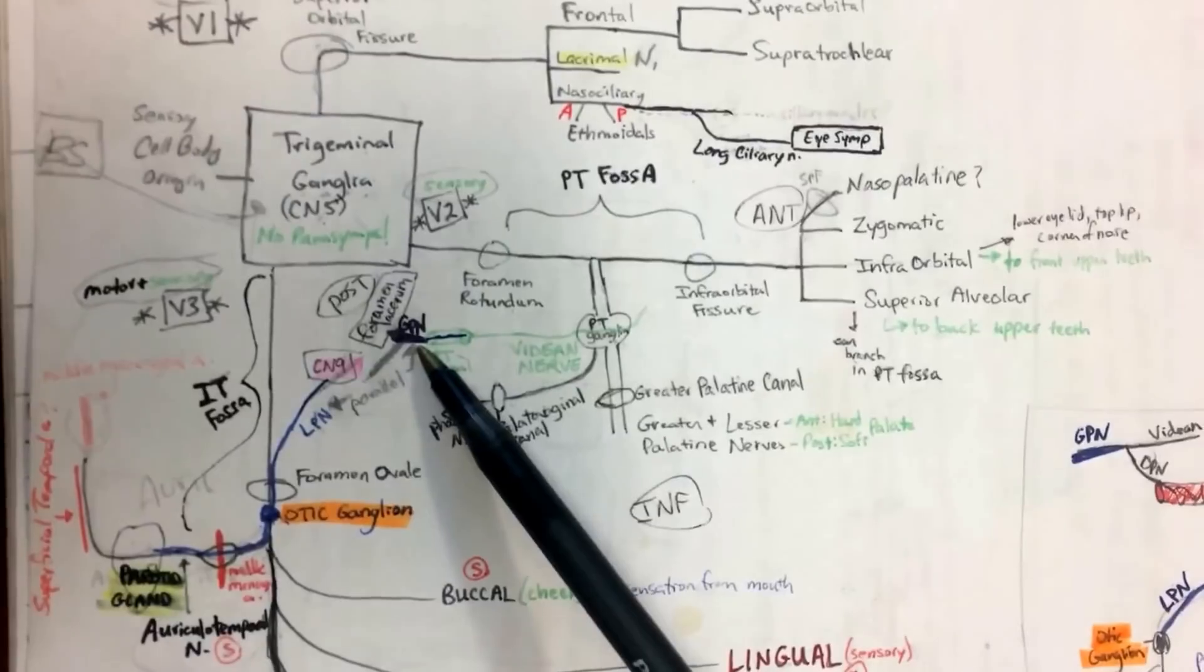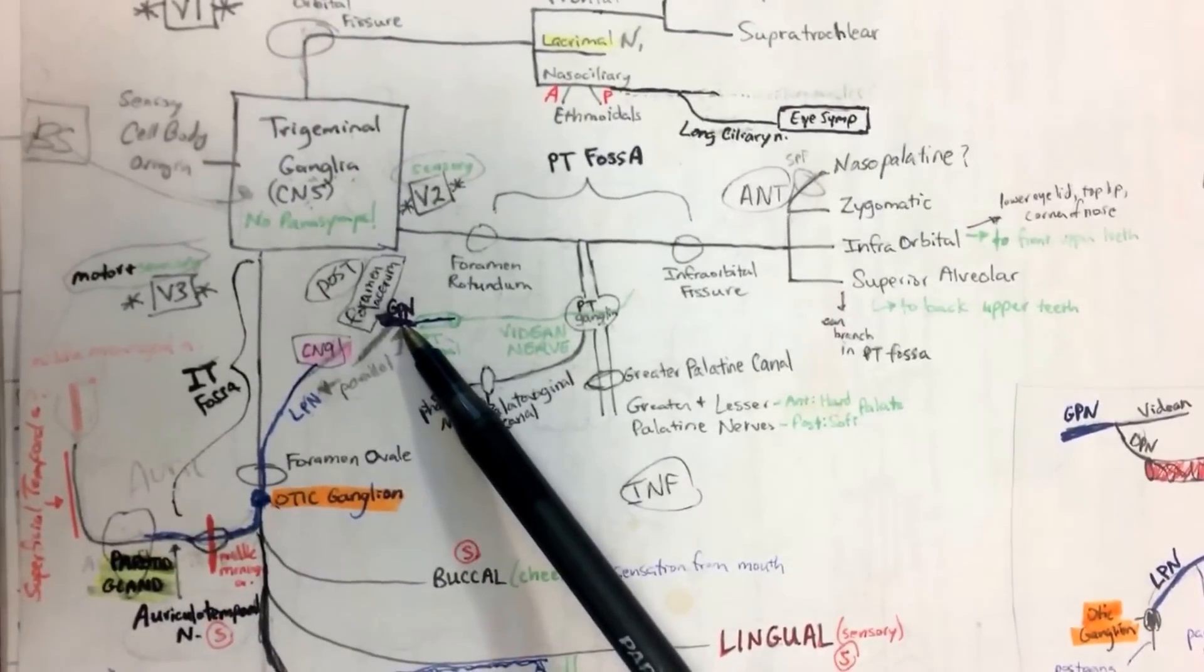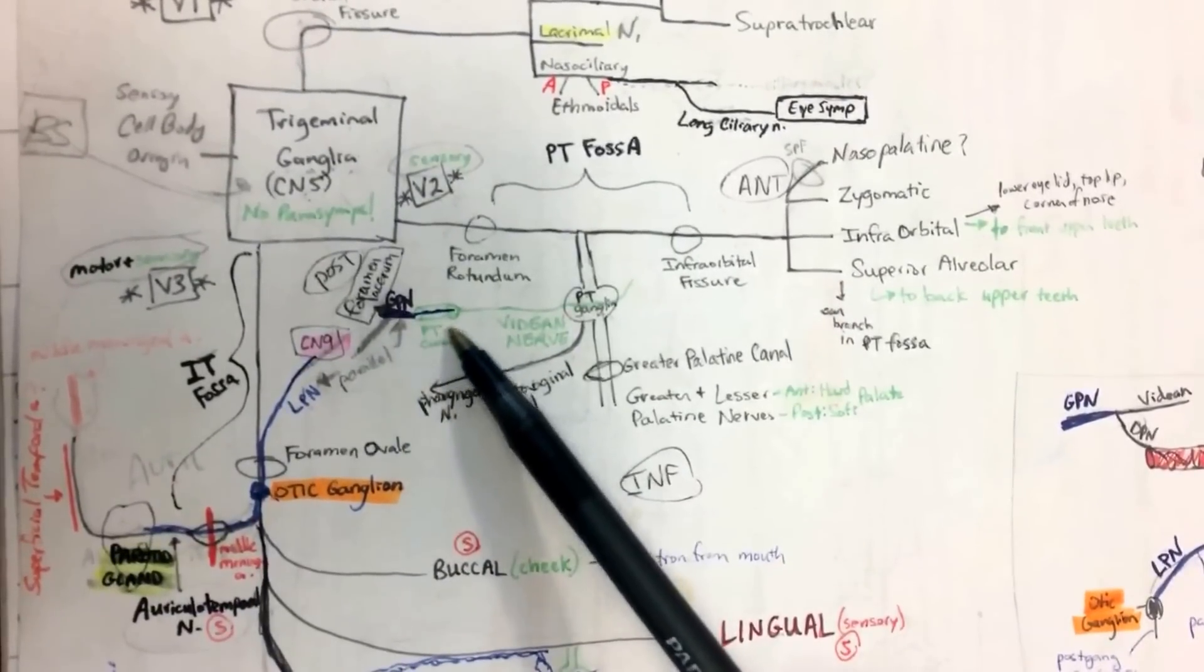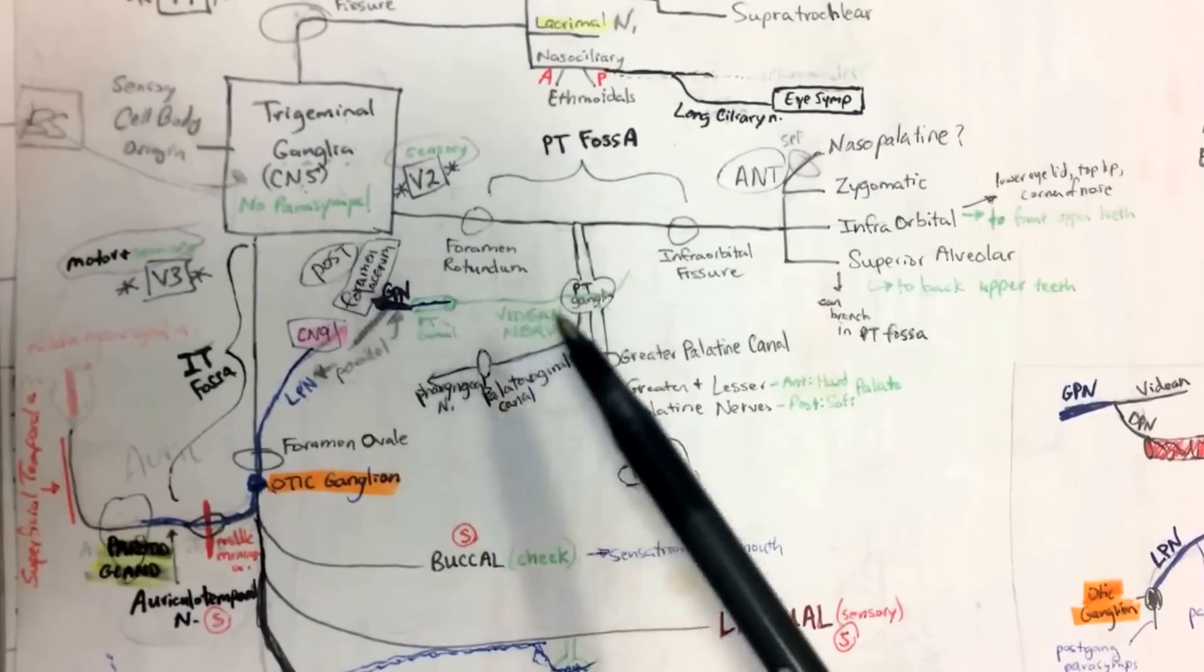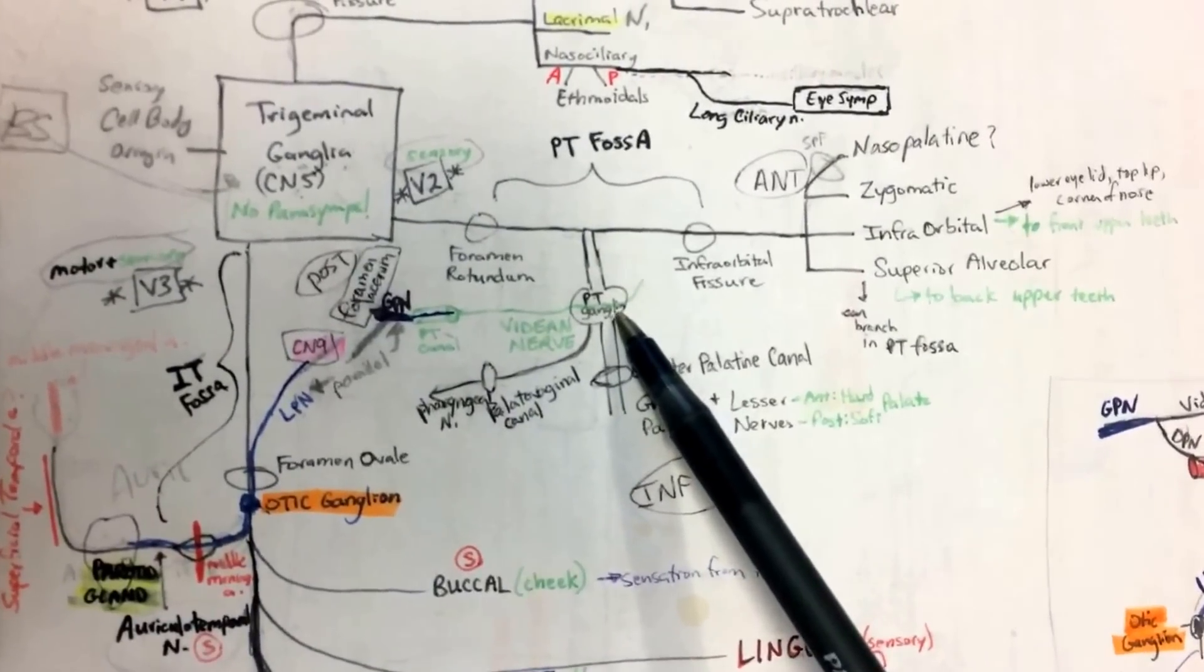So we said earlier, greater petrosal coming off of cranial nerve seven. It's going to join with deep petrosal, like we said earlier, that forms the vidian nerve and busts through the PT ganglia.